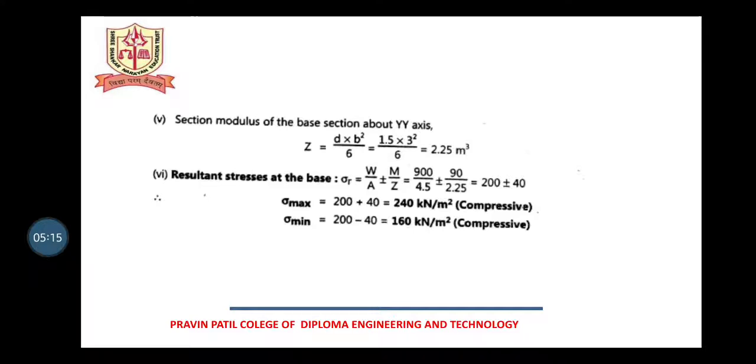Now the resultant stress is direct stress σ₀ plus or minus bending stress, so sigma naught will be W by A, plus minus M by Z. Plus minus gives you maximum and minimum. You have W value available, A value available, M you just calculated, and Z you just calculated. So maximum stress is 200 plus 40, that is 240 kN per meter square. Sigma minimum is 200 minus 40 which is 160 kN per meter square, and both are compressive in nature.